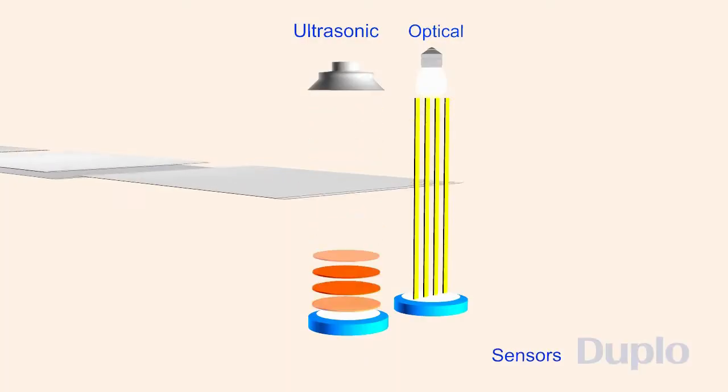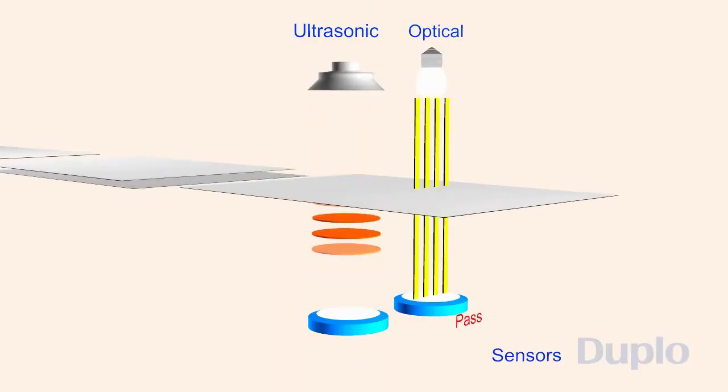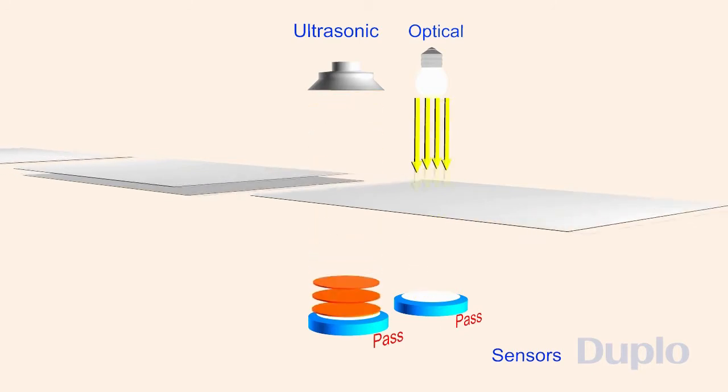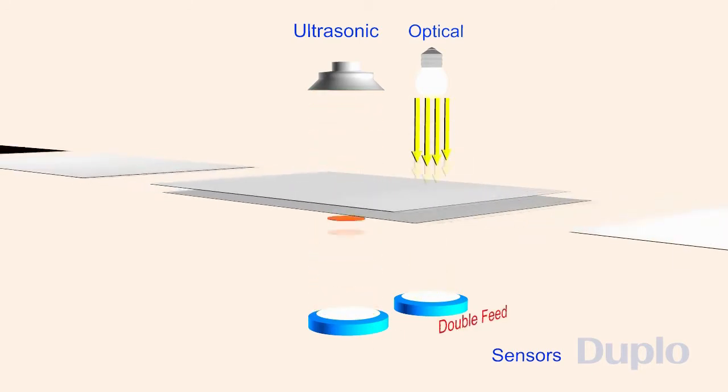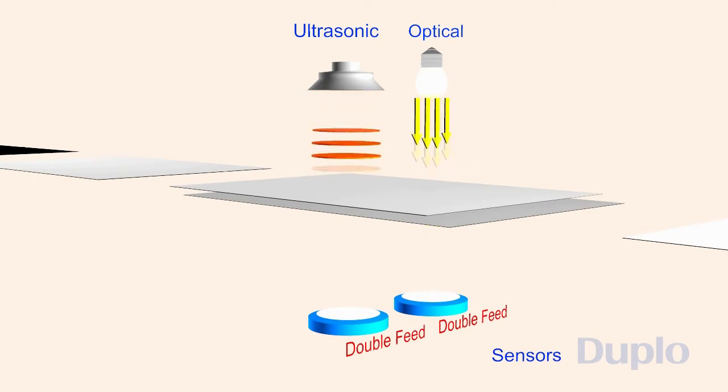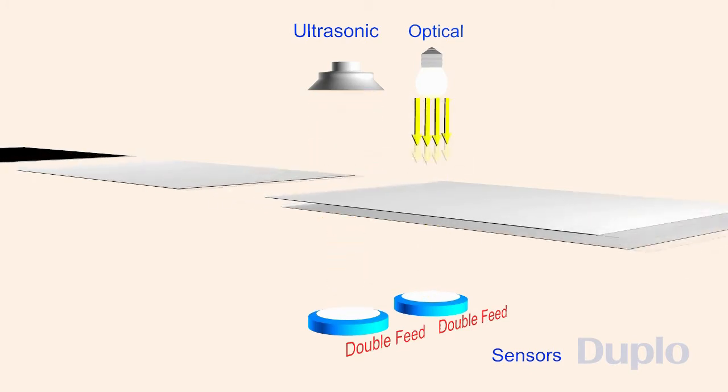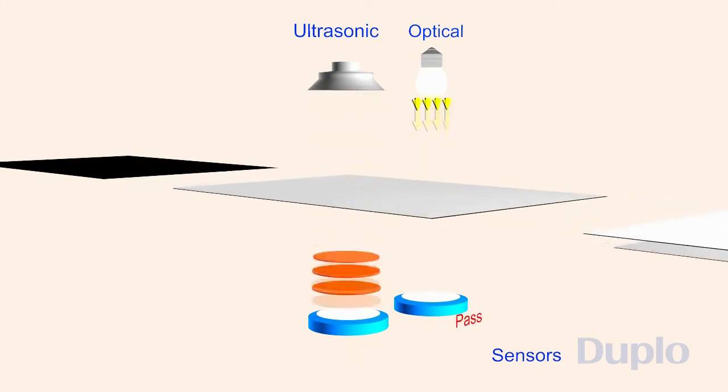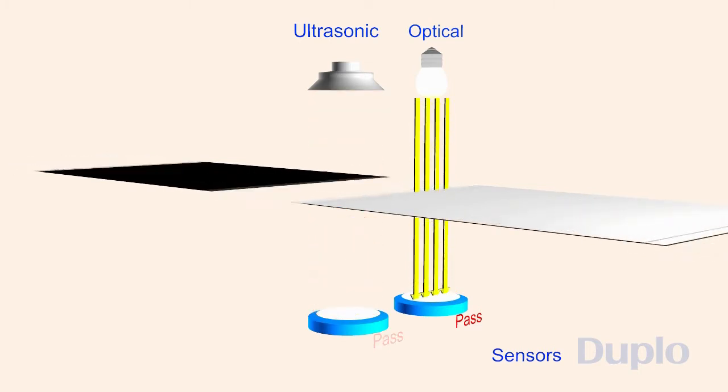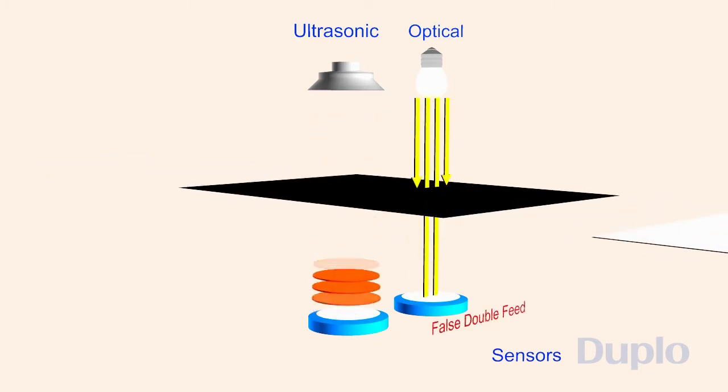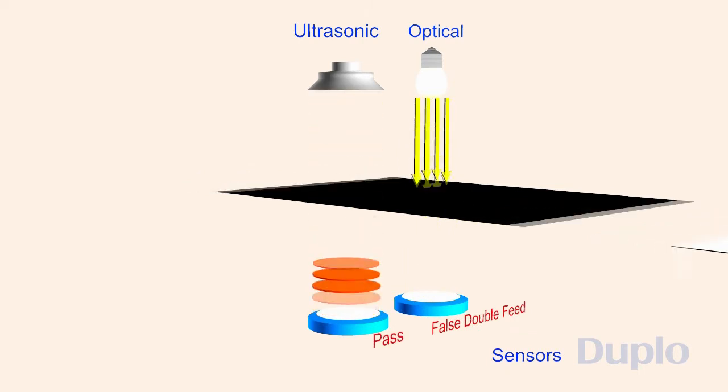As the sheets are fed, the unique dual double-feed detection system uses both optical and ultrasonic sensors to ensure accurate feeding and eliminate false errors. The ultrasonic sensors detect air gaps between two sheets when a double feed occurs, making it impervious to different color paper or inks. It also makes it possible to feed different paperweights within the same job.